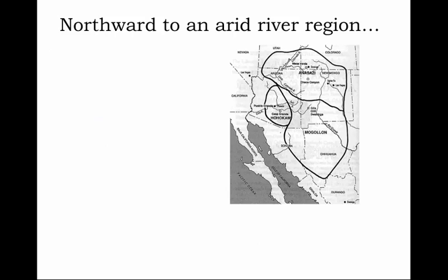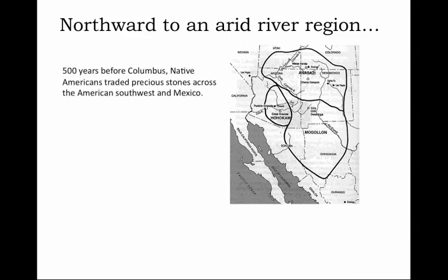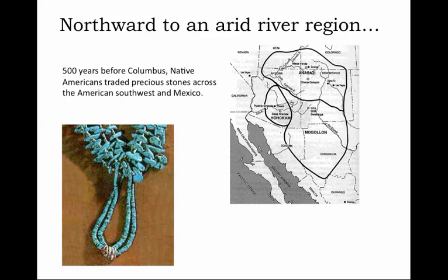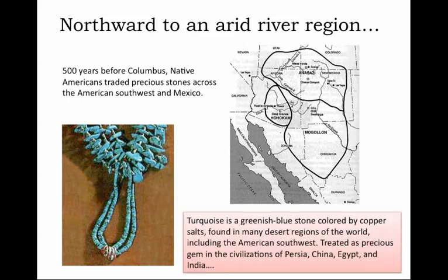Northward from Mexico to an arid river region in our own great southwest — the Four Corners region of Utah, Colorado, New Mexico, and Arizona — we see evidence not only of great civilization but once again of engineered landscapes centuries before Columbus. Five hundred years before Columbus's arrival, Native Americans traded precious stones across the American Southwest and Mexico. That precious stone, most valued, was turquoise — a greenish-blue stone colored through geologic processes by copper salts, found in desert regions of the world including the American Southwest, and throughout history treated as precious by peoples of Persia, China, Egypt, India, and the Four Corners region.